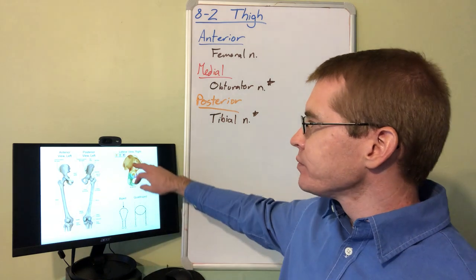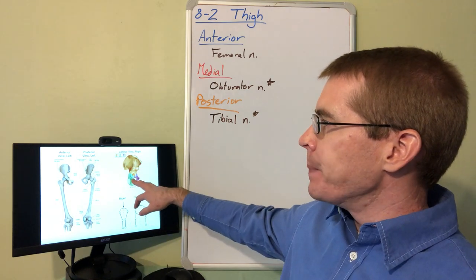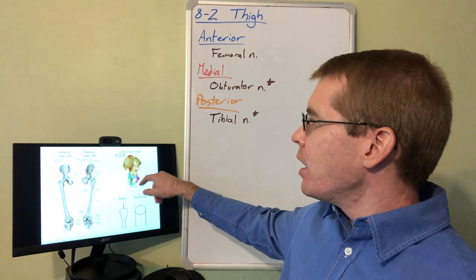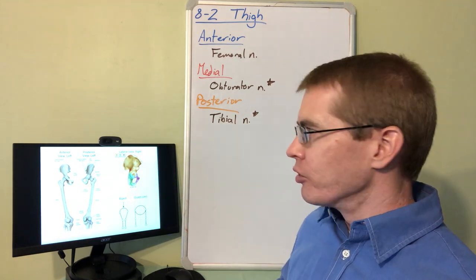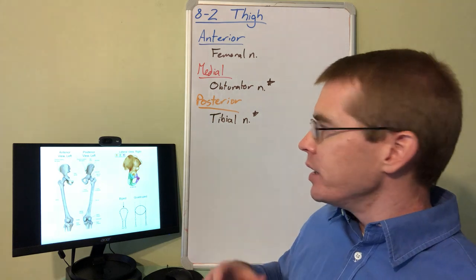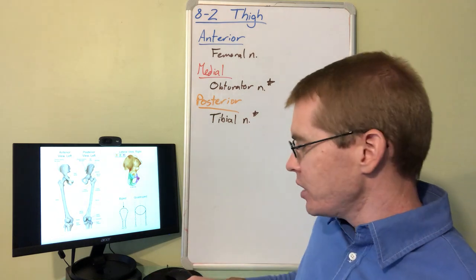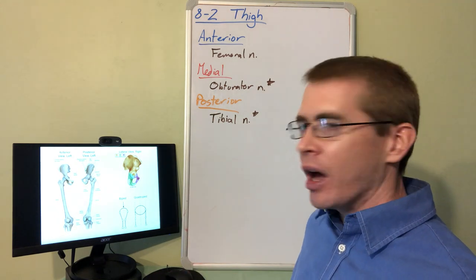Also notice that our pelvic bone, our os coxae, are composed from three separate bones that fuse during development. We have the ilium, ischium, and pubis that form the os coxae bone.